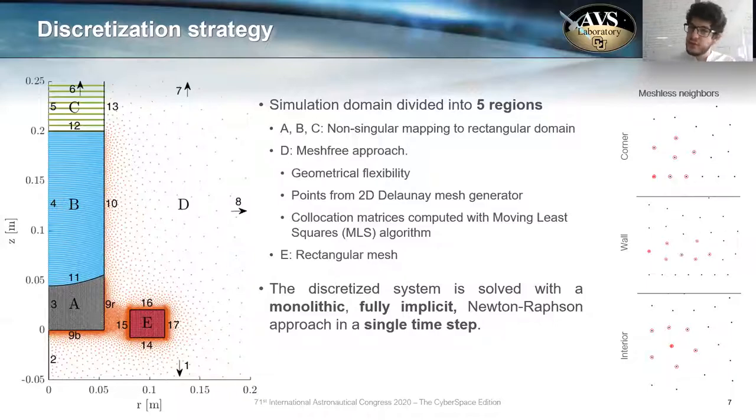If it is an interior node, we just select the nodes surrounding it. If it is in the wall, as you can see here in the middle, we select the nodes in the interior of the domain, and if it is in the corner, we follow more or less the same approach as if we are in the interior. This results in a better conditioning of the collocation matrices used in our system.